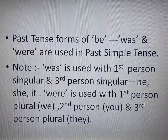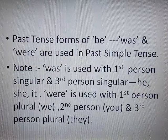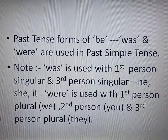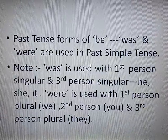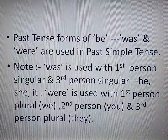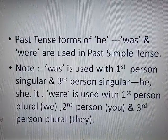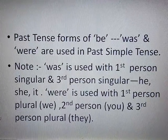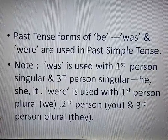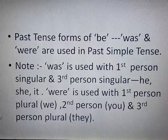The past tense forms of 'be' — 'was' and 'were' — are used in simple past tense. 'Was' is used with first person singular (I) and third person singular (he, she, it). 'Were' is used with first person plural (we), second person (you), and third person plural (they).